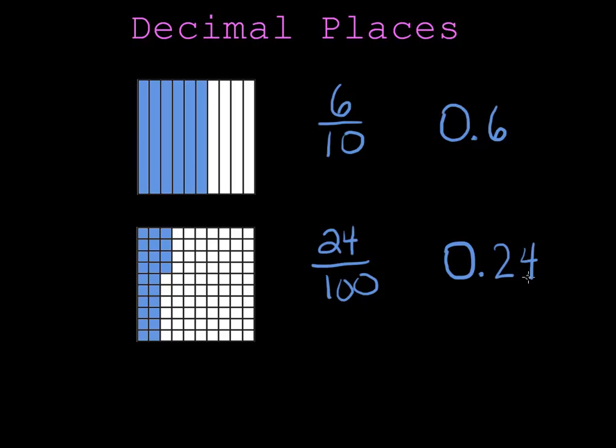Notice that in twenty-four hundredths I have a two in the tenths place. This two corresponds with one, two complete columns which are the same as a complete tenth like we have up above. And then this four in the hundredths place represents these four hundredths that were shaded in.